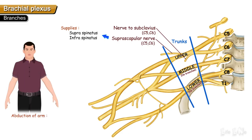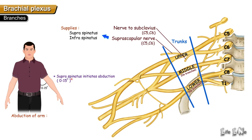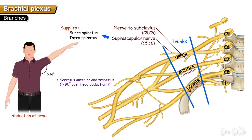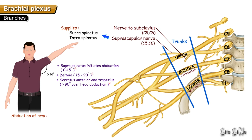Supraspinatus is important in the initiation of abduction of the arm. During arm abduction: 0–15 degrees is by supraspinatus, 15–90 degrees is by deltoid, and above 90 degrees — overhead abduction — is by serratus anterior and trapezius.